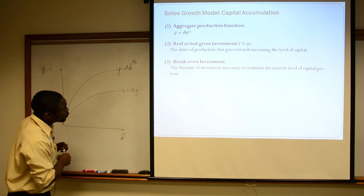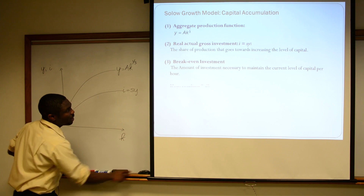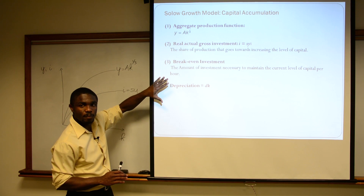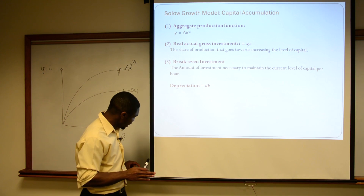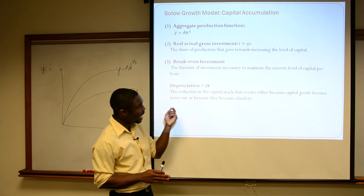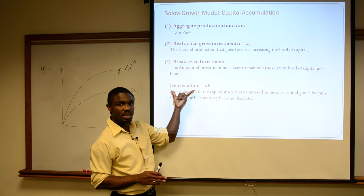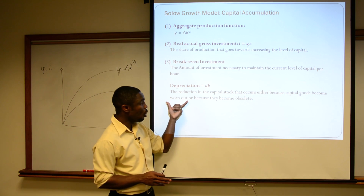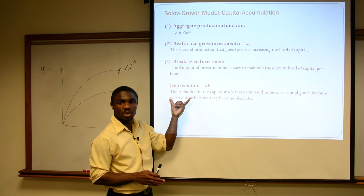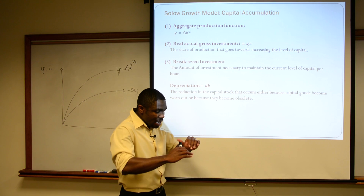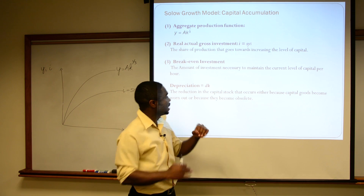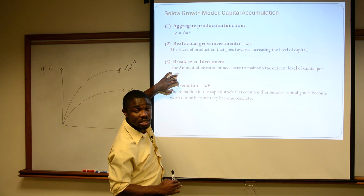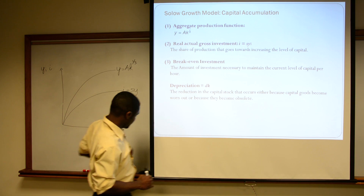What does that involve? Well, there are two things we need to account for. We must recognize that some of our capital is going to depreciate — it's either going to become obsolete or it's going to get worn out. And so we must at least compensate for the amount of capital that is going to be depreciating.